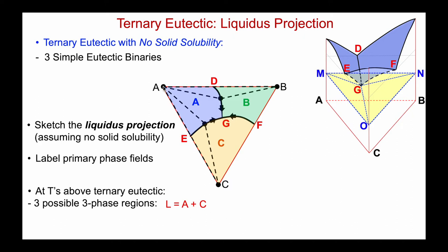Then we could have a three-phase equilibrium between A, B, and liquid — the liquid would have to lie somewhere on the DG eutectic valley. When those three phases coexist before the liquid reaches G itself, I'd use a tie triangle with compositions on the vertices A, B, and liquid. On the BC binary, the eutectic liquid F gives another three-phase equilibrium: liquid in equilibrium with C plus B, using this tie triangle.